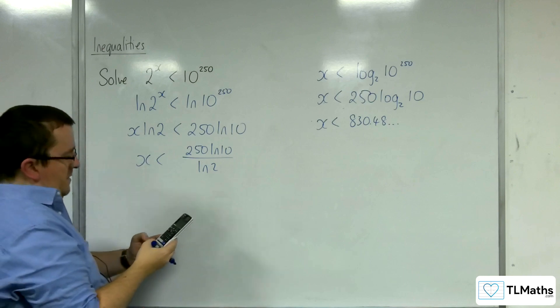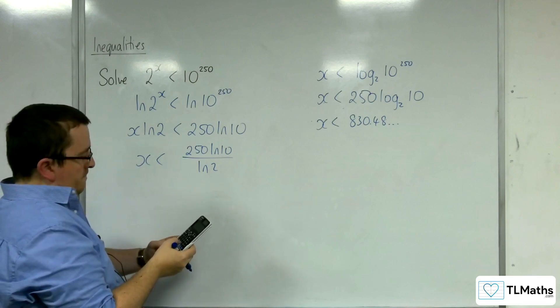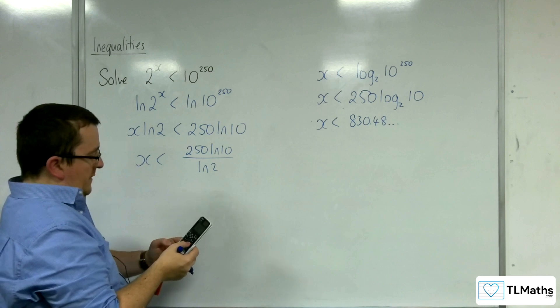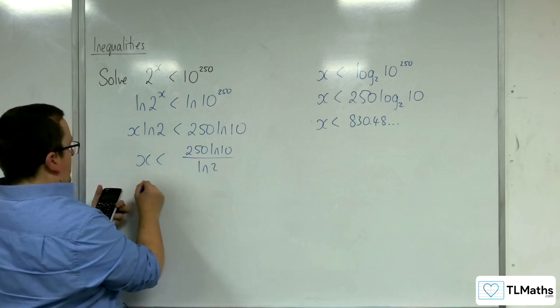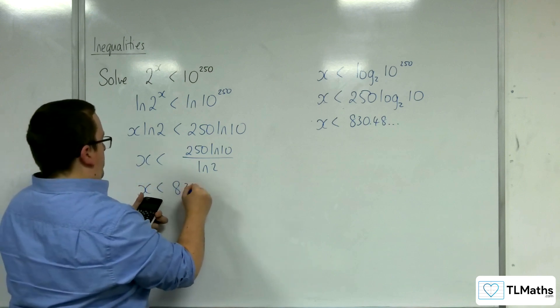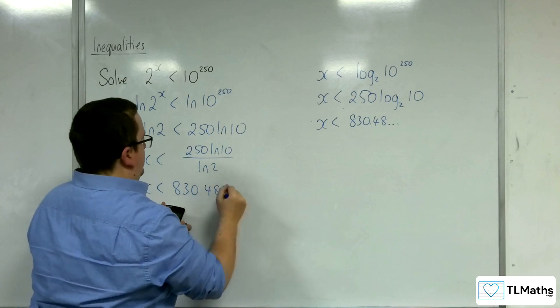And if I type that into my calculator, I should get the same thing. So x is less than 830.48, etc.